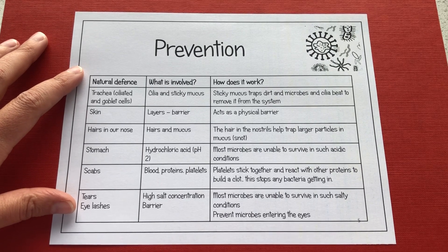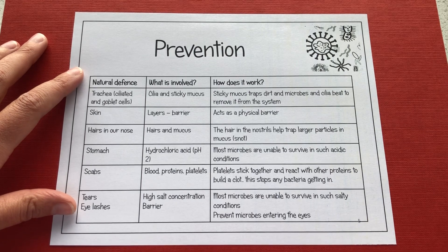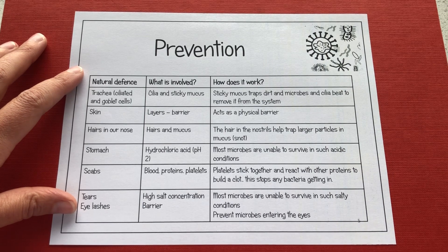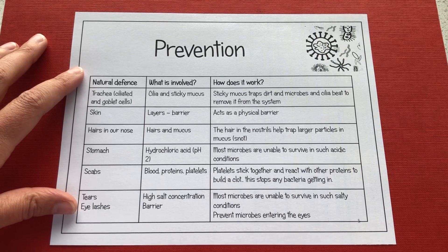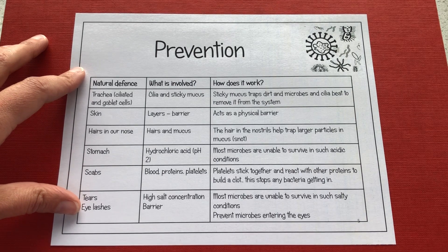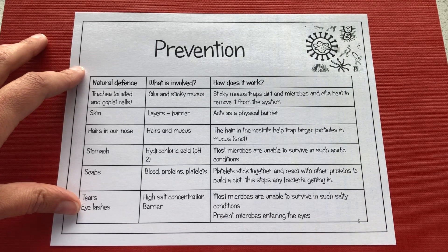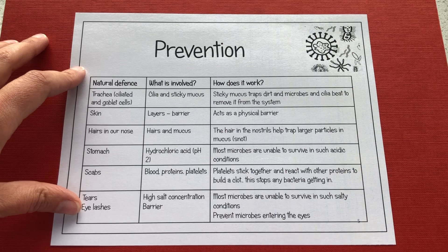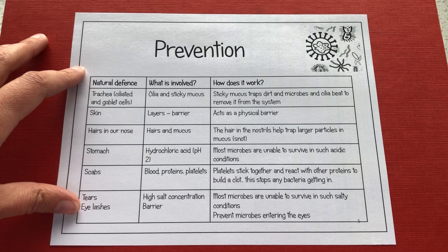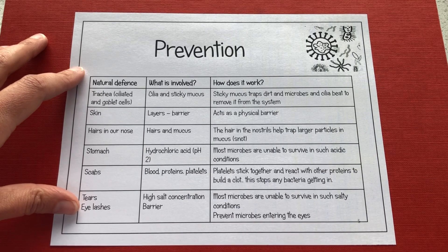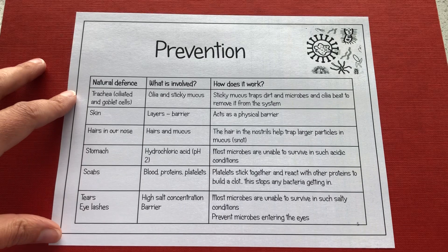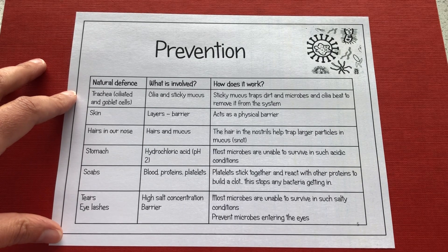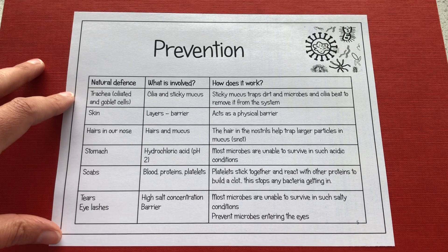We've got the skin which acts as a physical barrier. We've also got hairs in our nose and mucus to help trap larger particles from going down into our lungs. If microbes get into the stomach, we have hydrochloric acid in the stomach, which is pH 2, and what that does is it destroys and kills the bacteria. Obviously if we've got something like food poisoning there's so much bacteria it can't all be destroyed, but everyday bacteria in food we're able to get rid of using that hydrochloric acid.